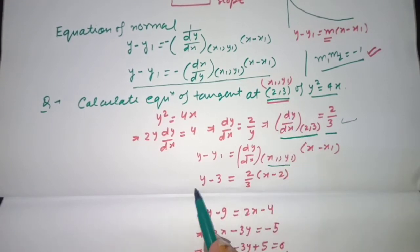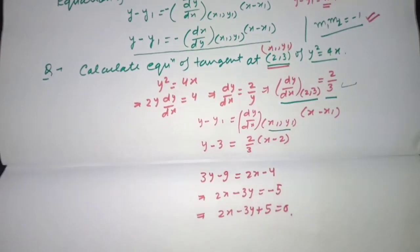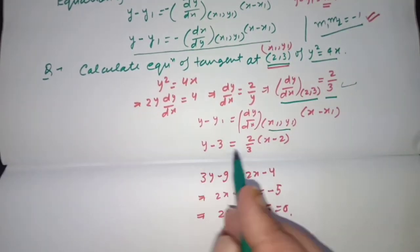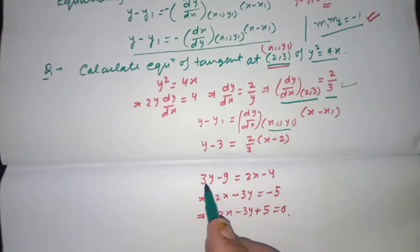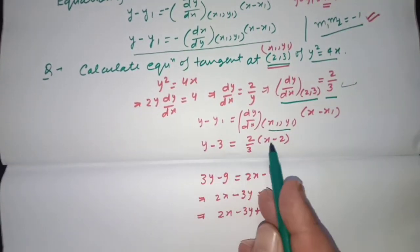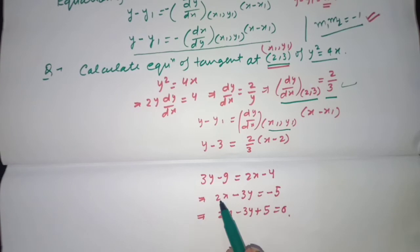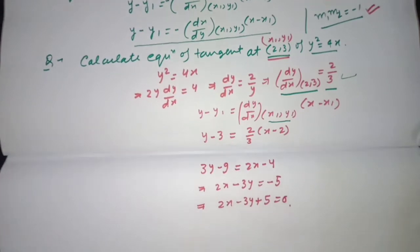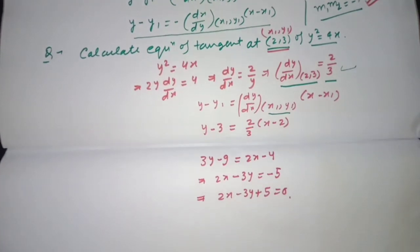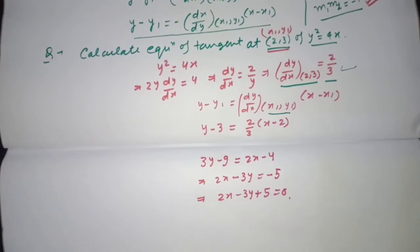Cross multiplying: 3y − 9 = 2x − 4. Rearranging, we get the equation of the tangent. Now suppose we have to calculate the equation of the normal.